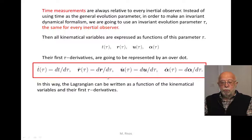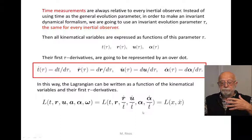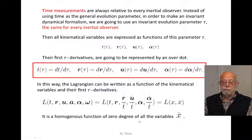This allows us to write the Lagrangian in terms of the kinematical variables and their first tau derivatives. For instance, in our more general Lagrangian for an elementary particle, the velocity is written as r-dot divided by t-dot, similarly the acceleration, and similarly the angular velocity. In this way the Lagrangian is a function of the kinematical variables and all their tau derivatives. By construction, this is a homogeneous function of degree zero in all the dot-variables, because it is a quotient of every pair of these variables.